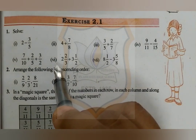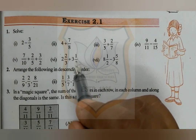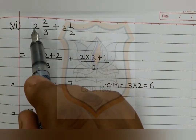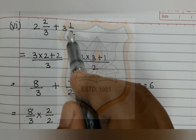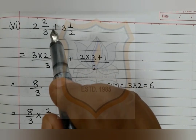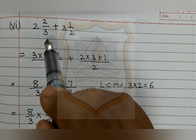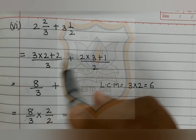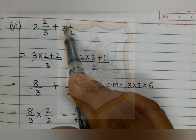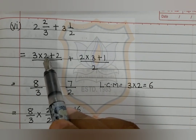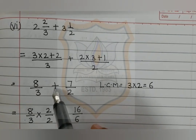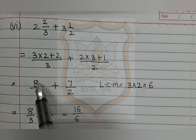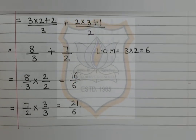Part 6 is 2 and 2 upon 3 plus 3 and 1 upon 2. We first convert these mixed fractions into improper fractions. For 2 and 2 upon 3: multiply 3 by 2 and add 2, giving 8 upon 3. For 3 and 1 upon 2: multiply 2 by 3 and add 1, giving 7 upon 2. Our expression becomes 8 upon 3 plus 7 upon 2.